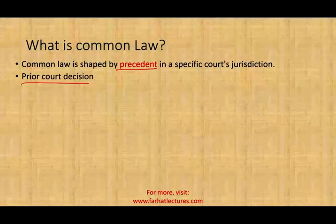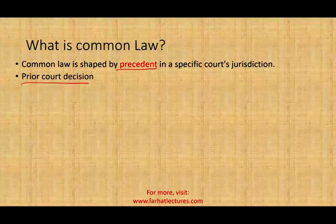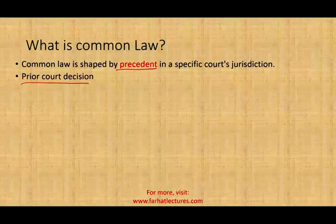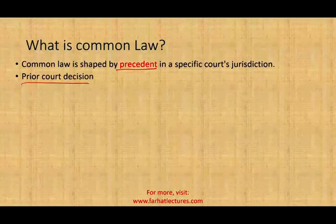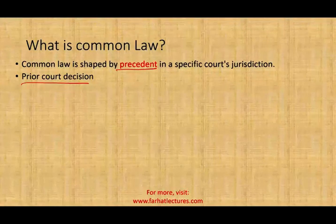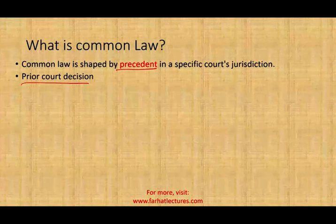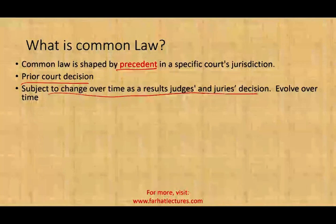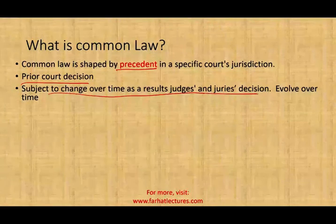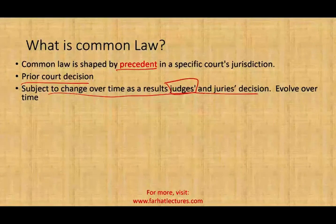Simply put, if a case lands in front of a judge, the judge looks at how the prior judge ruled given the circumstances. If the current judge agrees, the law stands as the prior judge decided. But if the new judge or jury decides the prior application of the law is not valid, the law becomes the new judgment of that court. Common law evolves over time as a result of judges' and juries' decisions. One single judge in a state can change the law.